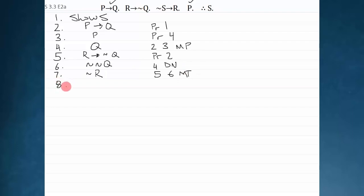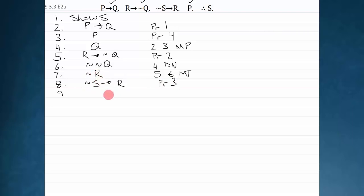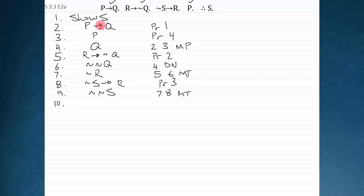What can I do with not R? I see that I can copy down premise three, not S arrow R, and that's premise three. I can modus tollens lines seven and eight. Line seven is the negation of the consequent of line eight, so when I apply modus tollens I get not not S. Again, be careful — I don't get S, I get not not S. That's lines seven and eight, modus tollens.